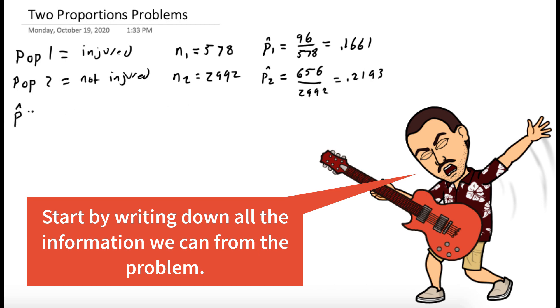The pooled proportion P hat is the number of people who wore a helmet, which is 96 plus 656, divided by the total number of people, which is N1 plus N2, or 578 plus 2,992. This works out to be 0.2106.